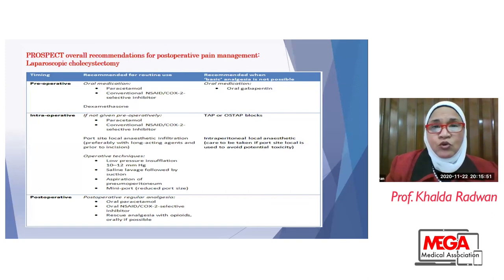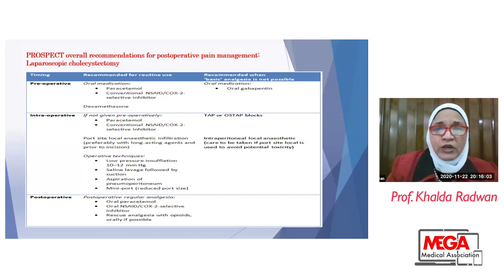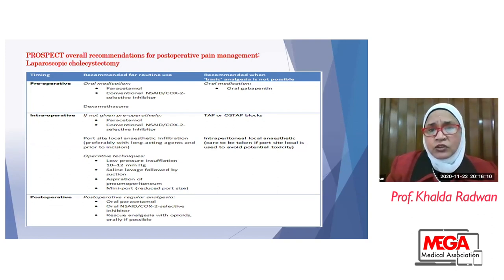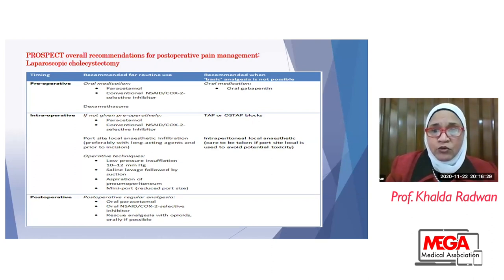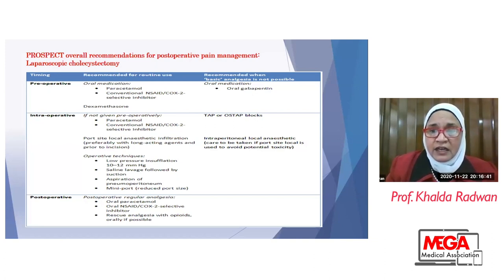Regarding pain management after laparoscopic cholecystectomy, there is also preoperative medication with paracetamol, NSAIDs, COX-2 inhibitors, and/or gabapentin. Dexamethasone is a first-line treatment to be used preoperatively for remarkable analgesic and antiemetic effects. Intraoperatively, if not given preoperatively, paracetamol and NSAIDs can also be given. We can use TAP blocks and intraperitoneal local anesthetics, but caution must be taken if the port site is used to avoid potential toxicity.